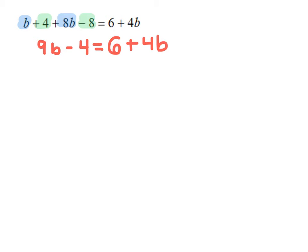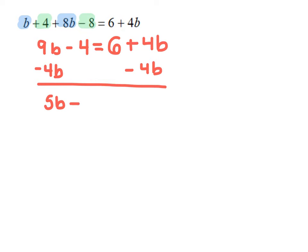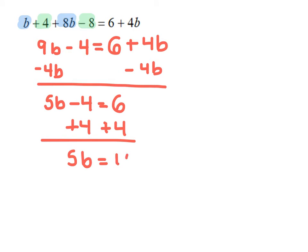Now we need to bring all terms with the variable to one side. I want my b variable on the left side, so I'll move 4b over by subtracting 4b from both sides. That gives us 9b minus 4b, which becomes 5b, minus 4 equals 6 — the 4b terms cancel. Now I need to bring the constants to the other side, so I add 4 to both sides, giving me 5b equals 10.